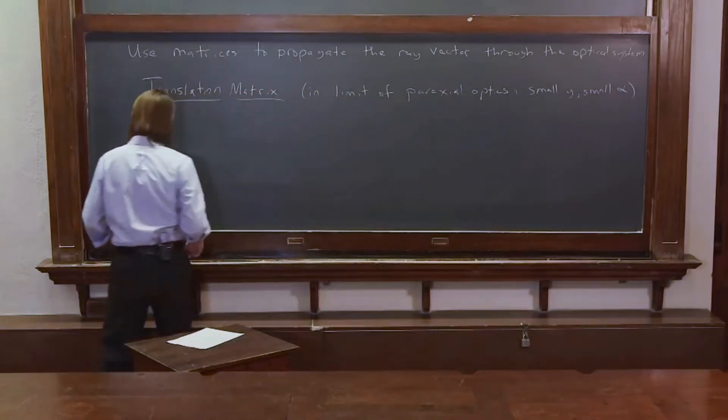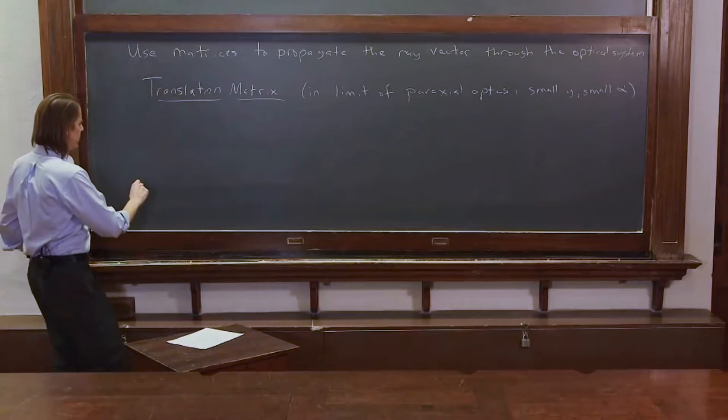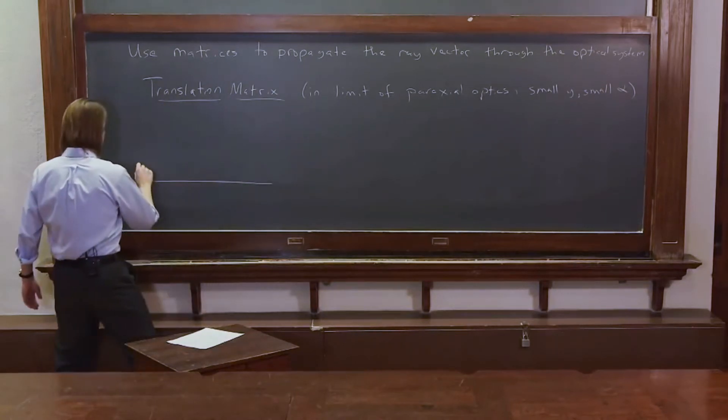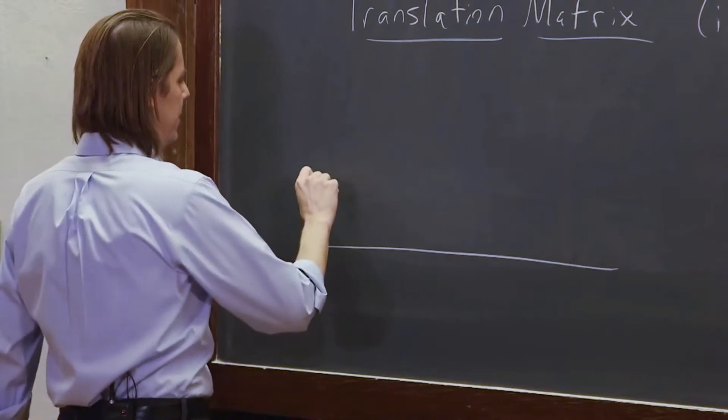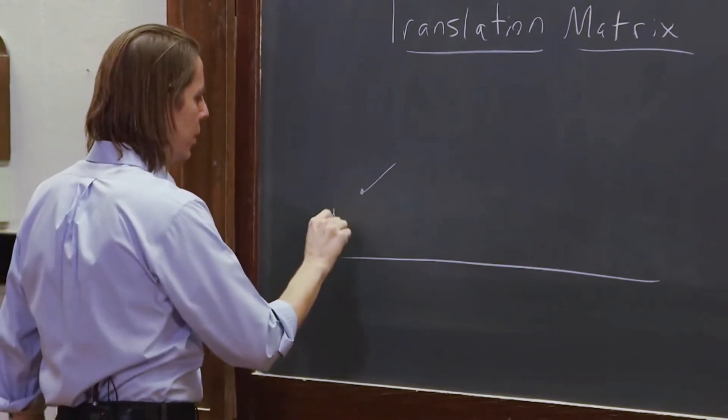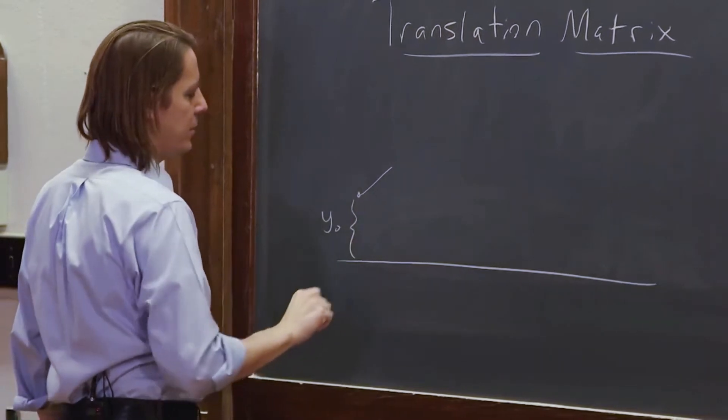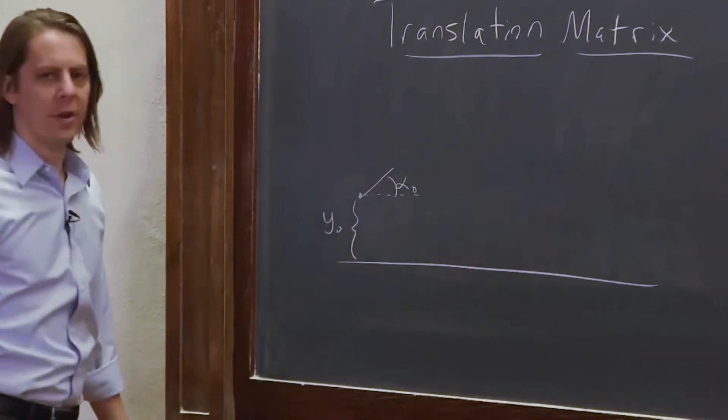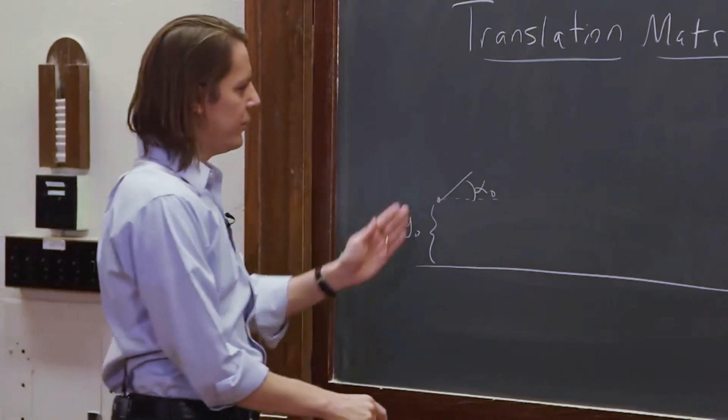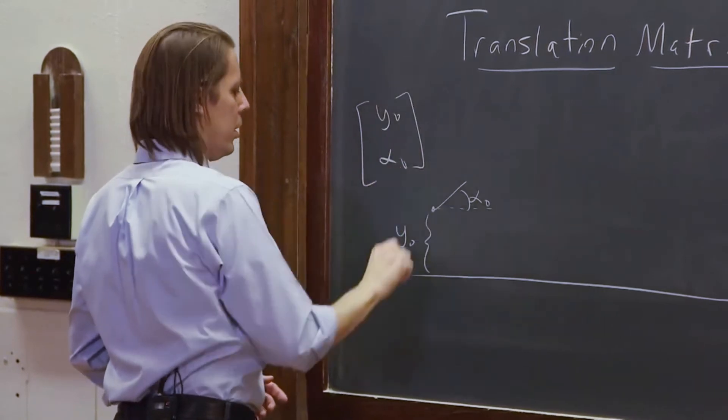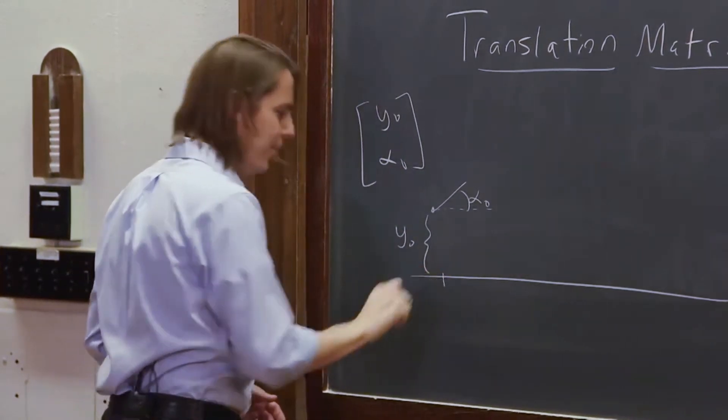So let's have a look. If we drew our optical axis down here, and we think about a ray that is at this height and going off at this angle. So here is y naught, the original height, and here's alpha naught. That's the properties right here.